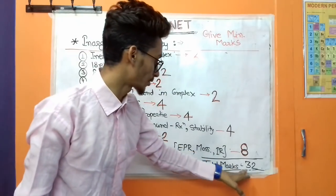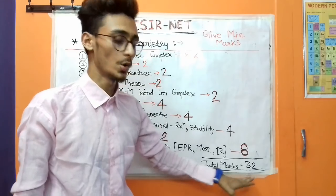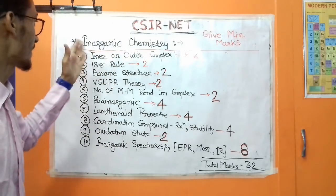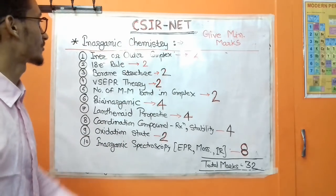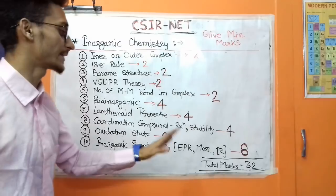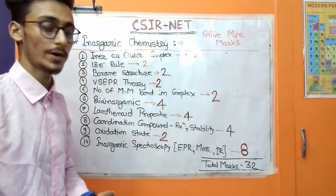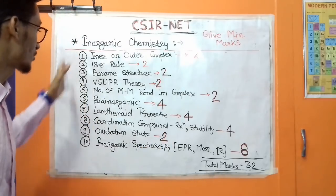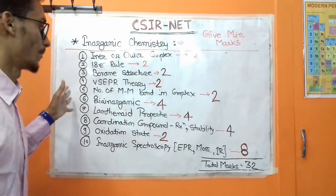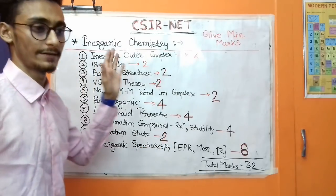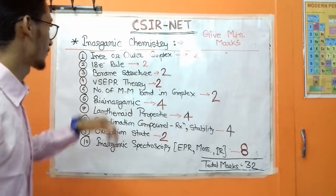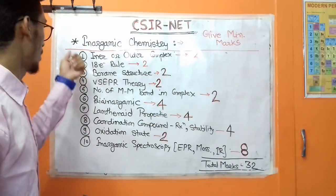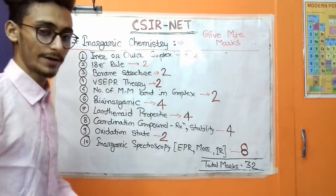The major marks topic in inorganic chemistry is inorganic spectroscopy — EPR, Mössbauer, and IR. The total approximate marks from inorganic chemistry in the NET exam is 32 marks. These topics are the ones most likely to come in the exam. Now let's move on to organic chemistry.